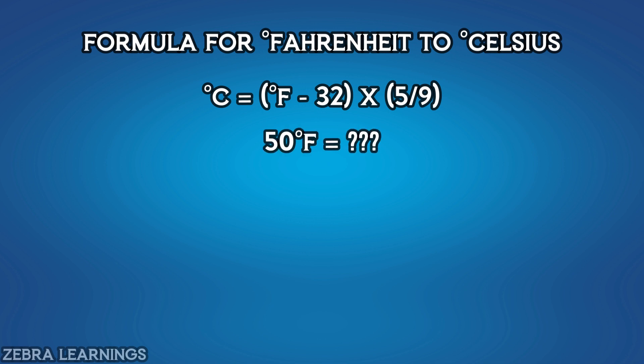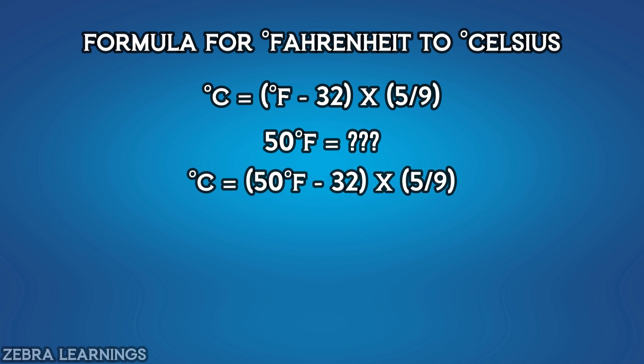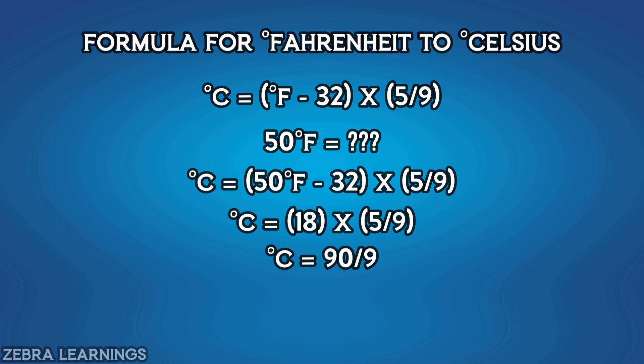Let's convert 50 degrees Fahrenheit to degree Celsius. Degree Celsius equals 50 degrees Fahrenheit minus 32, multiplied by 5 divided by 9. The result is 10 degrees Celsius. So 50 degrees Fahrenheit equals 10 degrees Celsius.